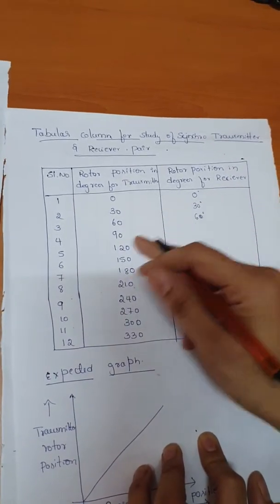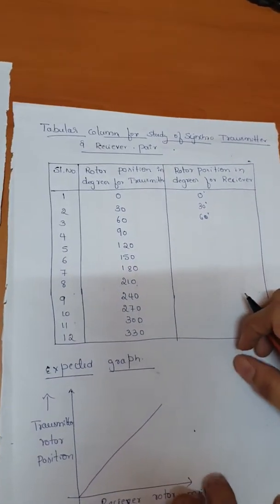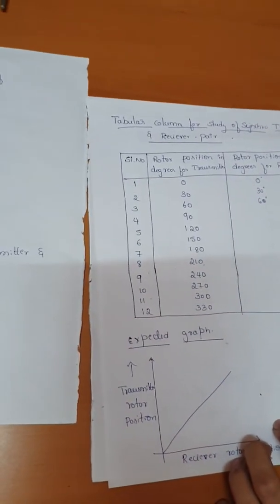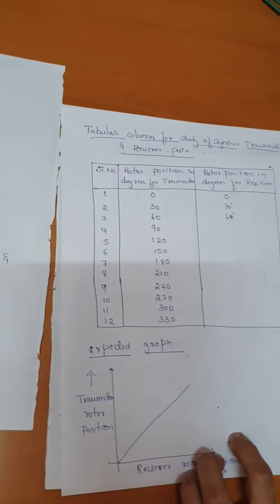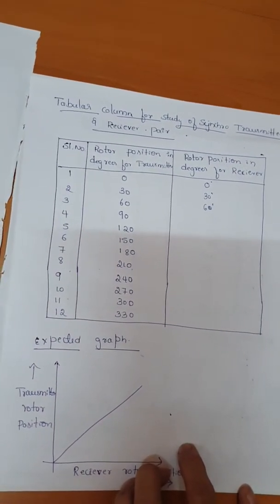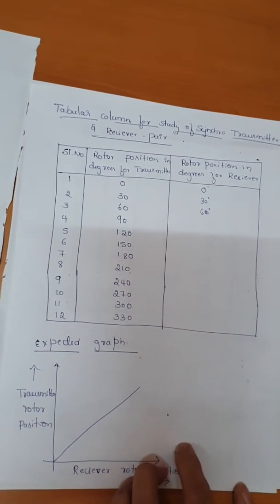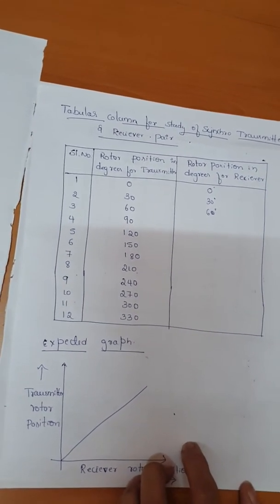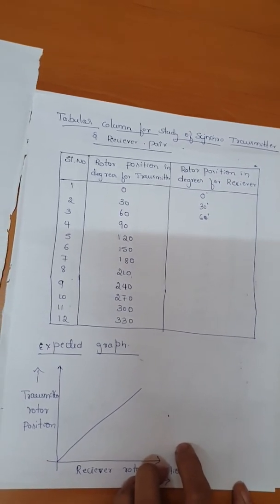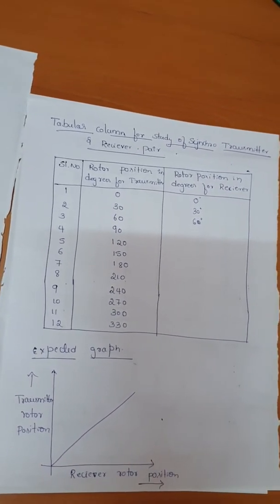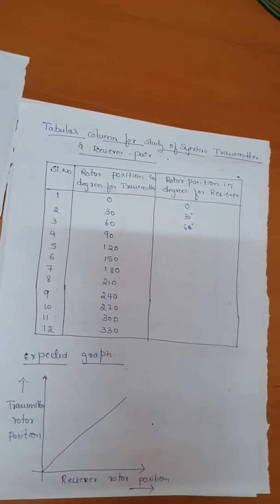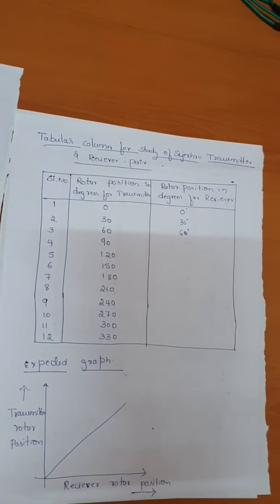This completes the transmitter and receiver pair experiment. After plotting this, the transmitted data and the receiving data both will be the same, so we are going to get one straight line indicating that the transmitted data and receiving data are both same. Coming to the application of the synchro transmitter and receiver pair: it plays a very important role in the operation of the navy system, especially found in every weapon as a communication system, also used in underwater detection and in the navigation system. Most of the time it finds its application in submarines and in the radar system. These are the applications of the synchro transmitter and receiver pair. Thank you.